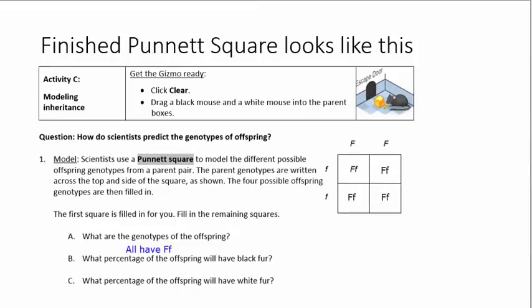Number 1A is pretty obvious. It says, what are the genotypes of all the offspring? Kind of gave it to you there. You're welcome.